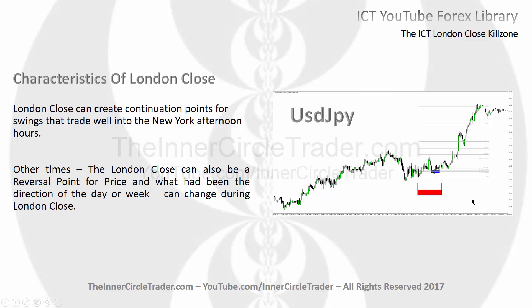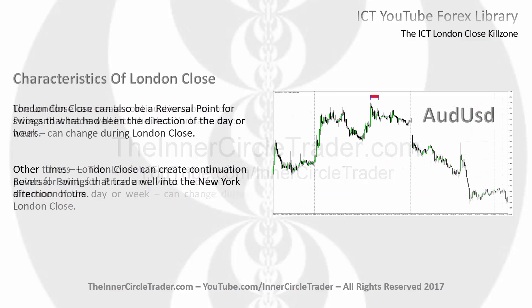The optimal trade entry long in here creates the continuation of the overall trend and a nice extrapolated move all the way up to the 300 extension. What had been the direction of the day or week can also change during the London Close. Let's take a look at an example here on the Aussie Dollar chart where we can see that very phenomenon take place — let's zoom in and take a closer look.